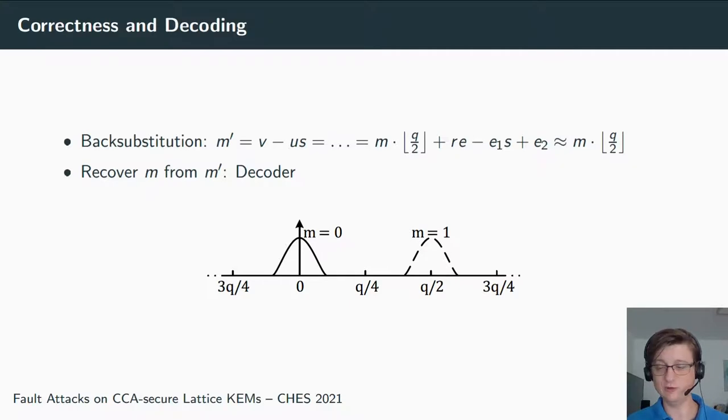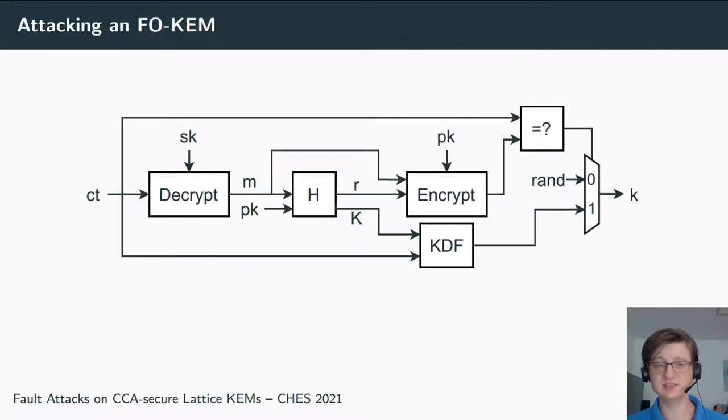But all these polynomials involved in this error term are sampled from this small error distribution, so we can say that m' is approximately m·q/2. This might look something like, you know, in a figure below, where we show an exemplary distribution of all the coefficients in this m'. We have two kind of Gaussians—not truly Gaussians, but kind of. We have one such peak, one such Gaussian centered around zero—these are all the zero bits—and one distribution centered around q/2—these are all the one bits. These distributions are far enough apart such that a decoder can then work out if a noisy bit is actually a zero bit or a one bit.